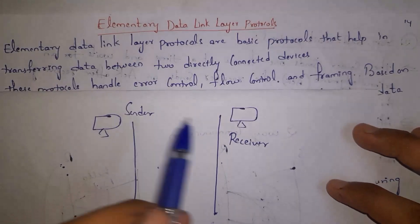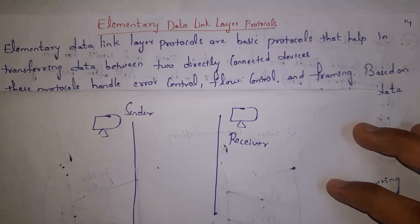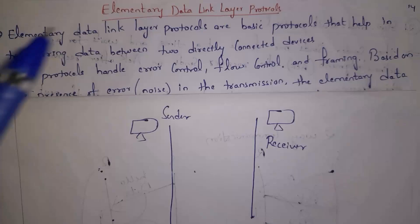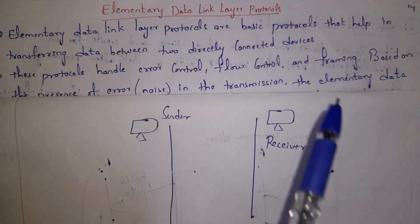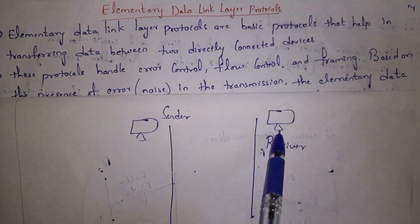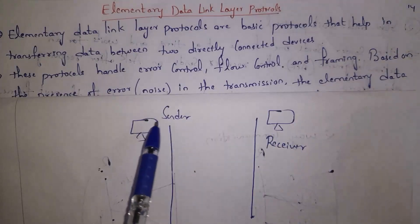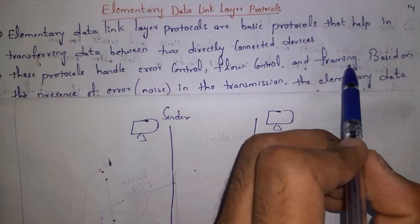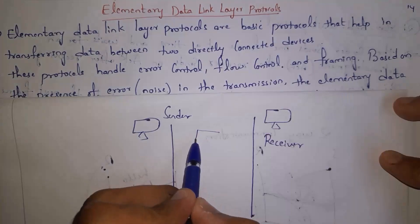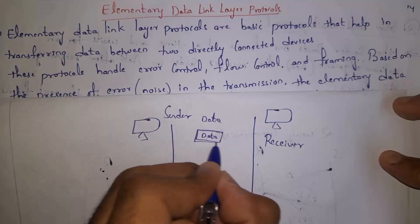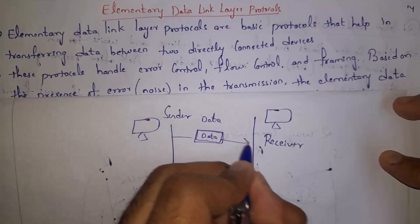Two devices can connect to each other and transfer data directly. These elementary data link layer protocols will handle errors as well as flow control. Flow control means how much speed the receiver can receive data — only at that speed will the sender send data. These protocols will also do framing. Framing means packing data: instead of directly sending data, data is placed in a frame and the complete frame is transferred to the receiver.